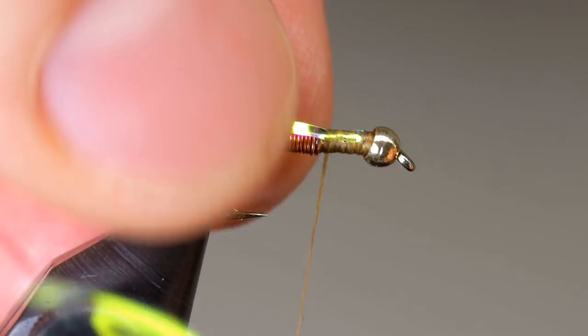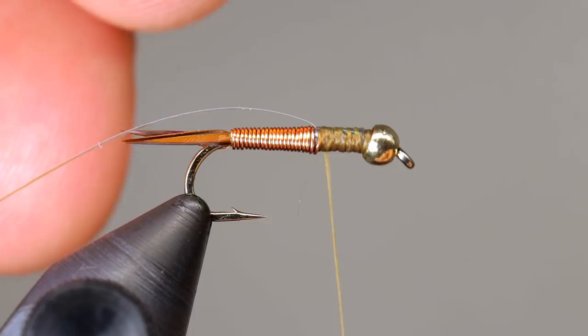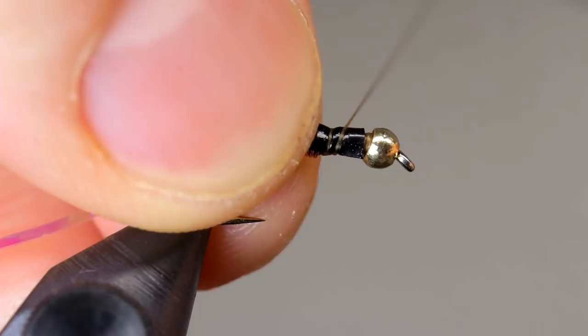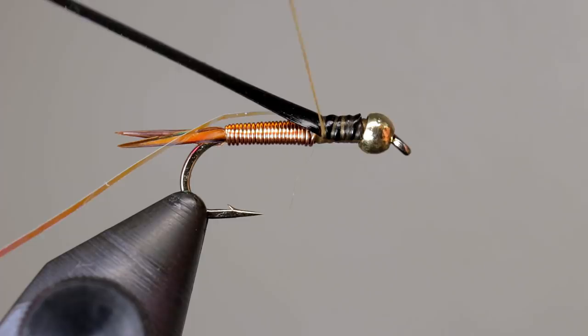One variation I make from the original is the use of black scudback. It comes pre-cut, and if you are tying a lot of these at a time, it can really speed up your tying. Tie the scudback in on top of the hook in the same place as the tinsel, so the end butts up close to the bead. Make sure you end with your thread by the copper wire again.